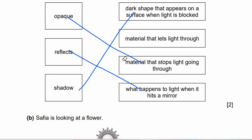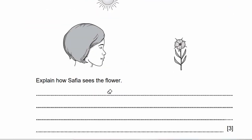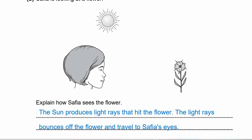Question 7B: Savya is looking at a flower. Explain how Savya sees the flower — we have three marks here. The sun produces rays of light that hit the flower. The light rays bounce off the flower and travel into Savya's eyes. That's how we explain how Savya sees the flower.